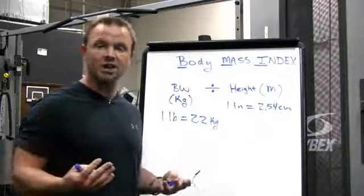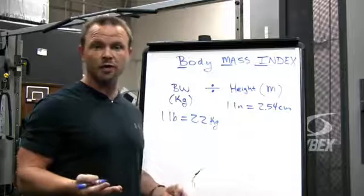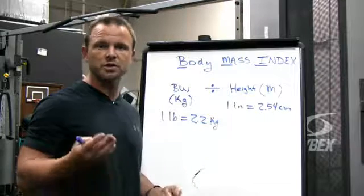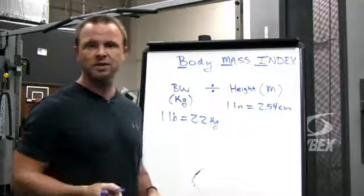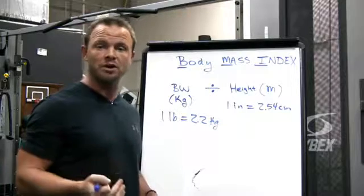For instance, I'm 5'9", 182 pounds, and yet I'm grade one obese on that chart. So if you're someone who's athletic or you work out and lift weights, it's not going to be the most accurate reflection. I would go with body composition.